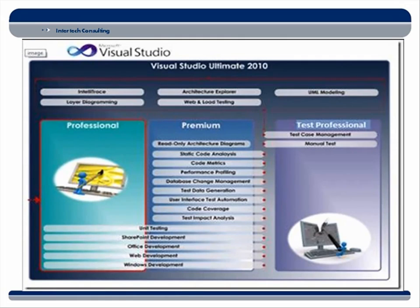I'm using Visual Studio Ultimate, and here's a quick visual breakdown of the different versions of Visual Studio available. The Professional Edition includes unit testing, SharePoint development, web development, and Windows development. The Premium Edition adds read-only architecture diagrams, code analysis, code metrics, database change management, User Interface Test Automation — that's the coded UI test — code coverage, and test impact analysis. We're going to spend most of our time looking at Test Professional, which covers test case management and manual testing. And at the Ultimate Edition level, you get IntelliTrace, web and load testing, UML modeling, and that sort of thing.